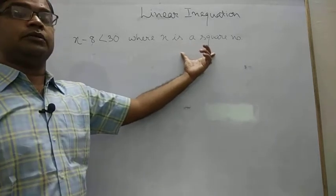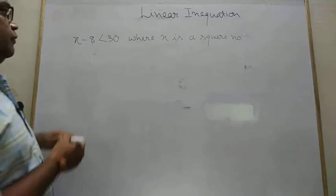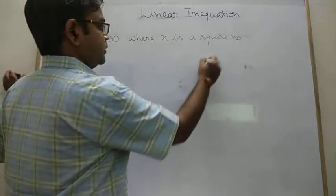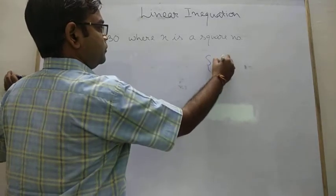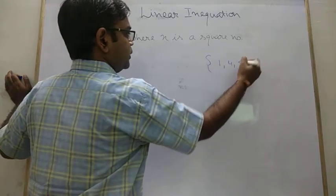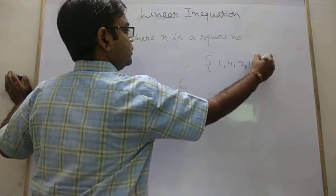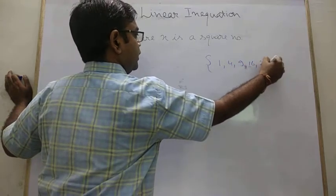This says that about discuss about replacement set. So if we discuss about replacement set, the replacement set must be, it's 1, 4, 9. Then after 9 we have 16, then 25 and so on. This is your replacement set.